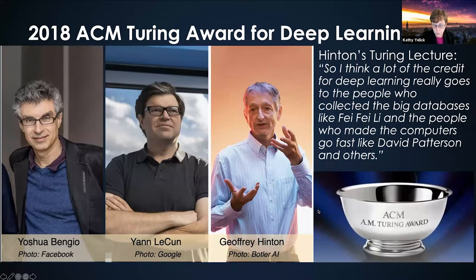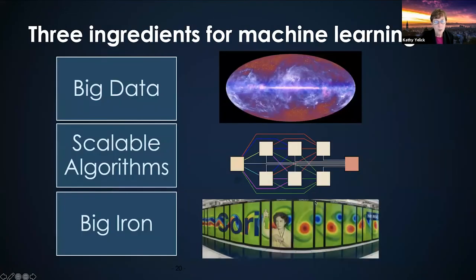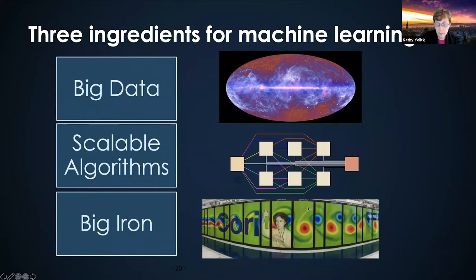I don't want to understate the importance of ongoing algorithmic work in machine learning, but I'm going to talk about performance issues and how we map these algorithms onto modern hardware. The three things you need for the success of machine learning are: big data — you need a lot of data if you're going to use deep learning algorithms — scalable approaches that can actually take advantage of fast hardware, and the fast hardware itself, what I'll call big iron.